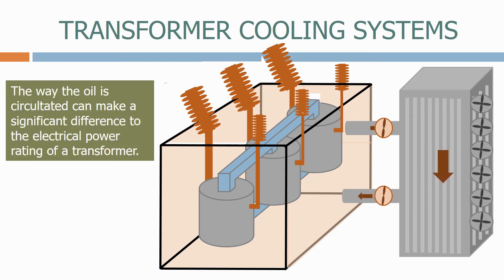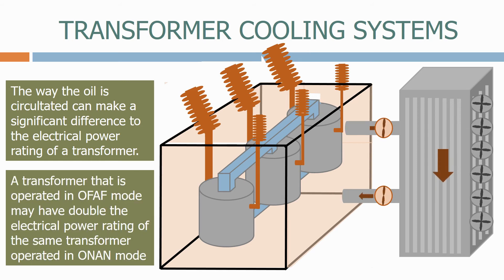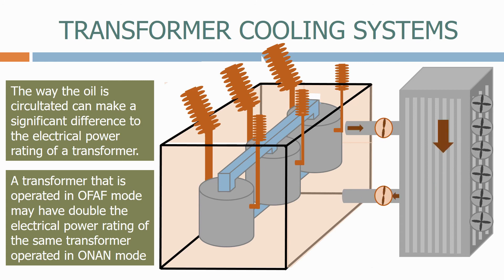The way the oil is circulated can make a significant difference to the electrical power rating of a transformer. A transformer operated in OFAF mode — oil forced, air forced — may have double the electrical power rating of the same transformer operated in ONAN mode, i.e. oil natural, air natural.